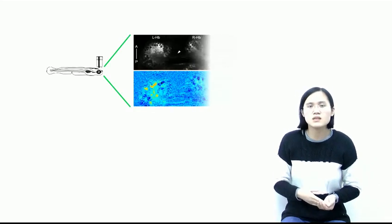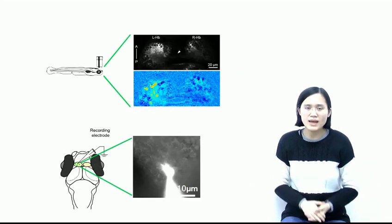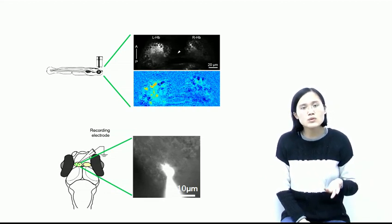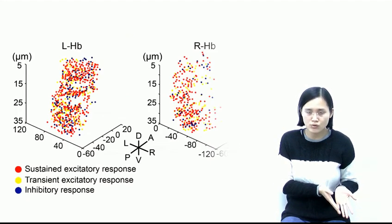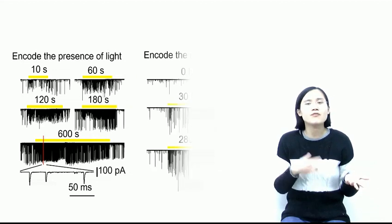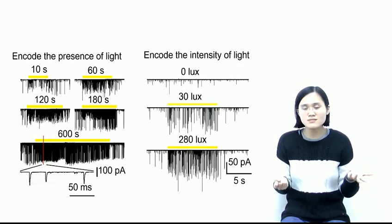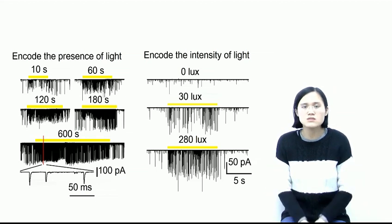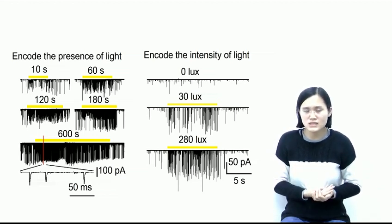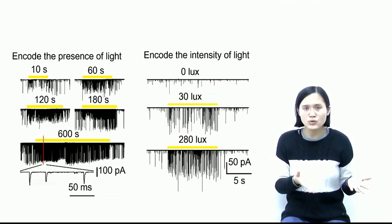Then we wondered why the habenula could mediate the light-preference behavior. To answer this question, we performed in vivo calcium imaging and patch clamp recording of habenula, and found that visually responsive habenula neurons preferentially located in the left dorsal habenula, and their sustained activities and firing frequencies encoded the presence and intensity of ambient light respectively. Through these two encoding strategies, the left dorsal habenula could continuously sense the contextual brightness, a premise of mediating light-preference behavior.